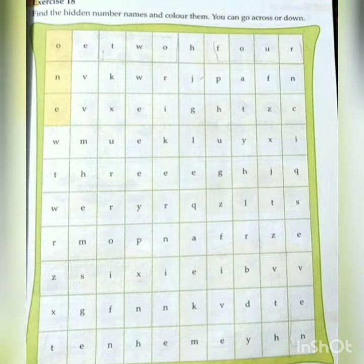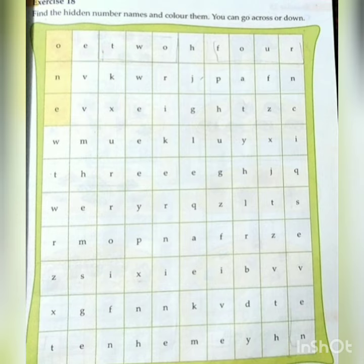Page number 17 has Exercise 18 — it's a fun activity. What you have to do: there are some hidden number names on the page. Find the spellings, cover them in a box, and color them. For example, as you can see: O, N, E — 'one' is already colored. In the same way, find the rest of the spellings and color them with different, pretty colors. Thank you, take care!